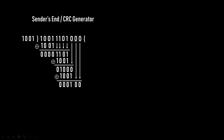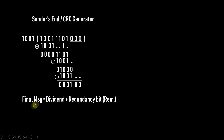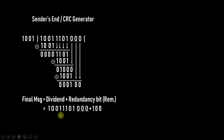Bringing those two bits down gives us only 3 bits from the leading one, but our divisor is 4 bits, so no further division is performed — this is our remainder. The final transmitted message is the original dividend with the appended zeros replaced by the remainder bits. We had 3 appended zeros, so we take only 3 bits from the remainder (starting from the right): 1 0 0. So the zeros are replaced with 1 0 0, giving us our complete transmitted message.